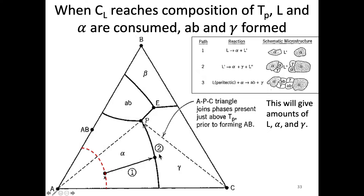Up to this point, the entire crystallization path from x all the way down to point P follows the same path as the eutectic — nothing has really changed. The difference begins at point P, where the liquid has the peritectic composition. We already have been forming alpha and gamma, and we continue to do so, but now a third phase is involved: AB. The liquid plus alpha go to form AB, consuming alpha. This is the key difference from eutectic: a solid gets transformed into making a different solid, which in this case is AB.